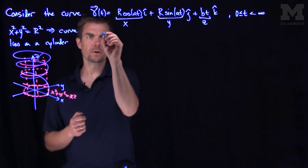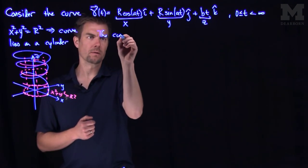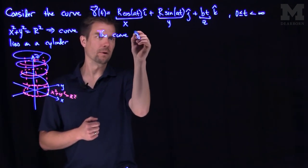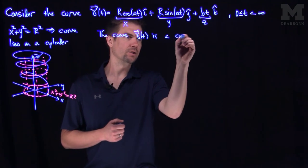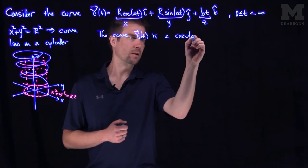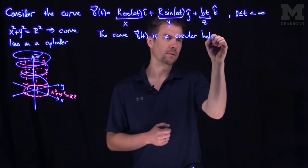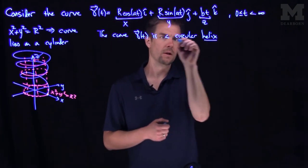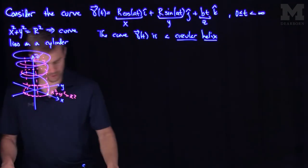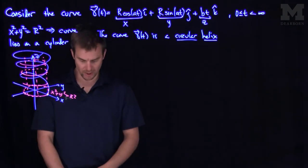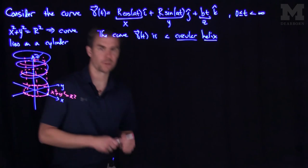In particular, plugging in t equals 0 gives the point r î, and as t increases we move around and up the circle, spiraling around this cylinder. So we call this curve gamma of t a circular helix. What we'll do now is analyze the circular helix by putting it into arc length parameter.